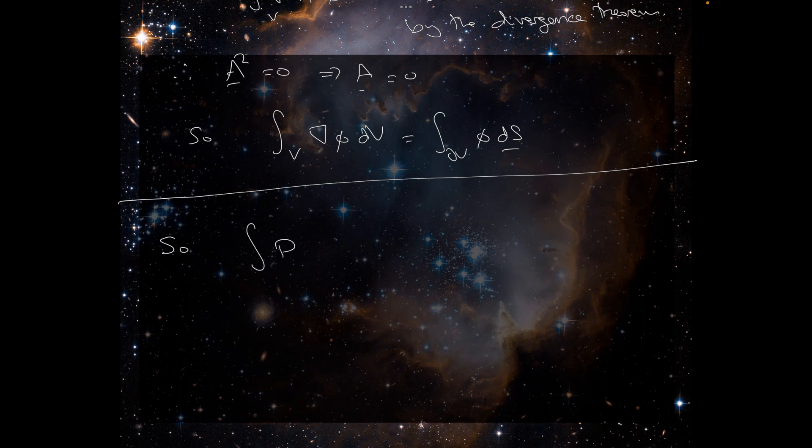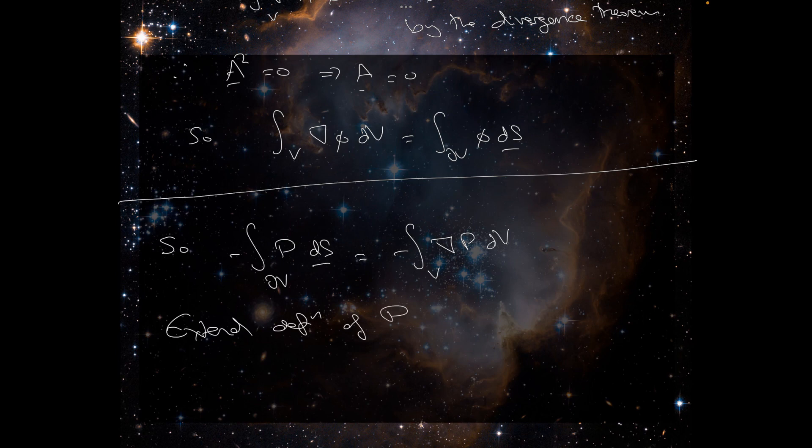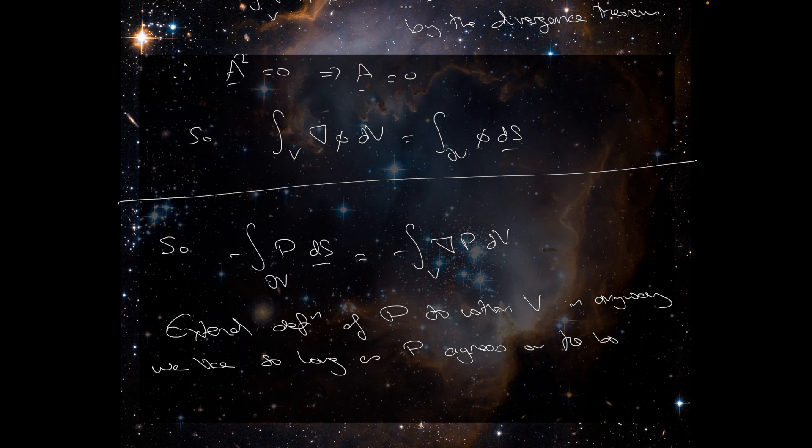So the integral of P dS over the boundary is equal to the integral of the gradient of P dV over V. At this stage, we notice that the pressure is not actually defined within the volume. So we extend the definition of P to within V in any way we like, so long as P agrees on the boundary and P is at least continuously differentiable.